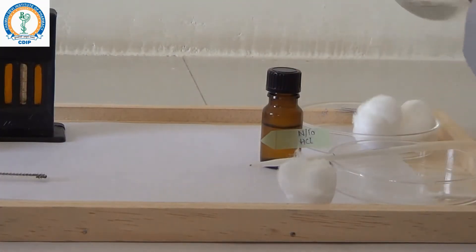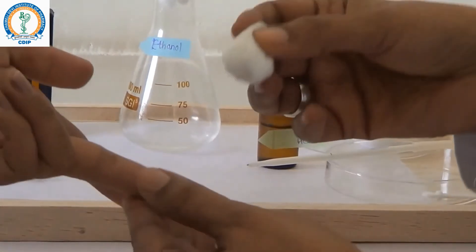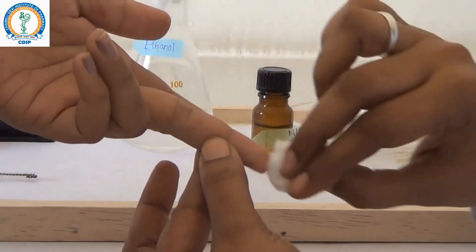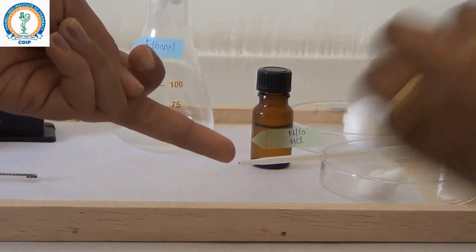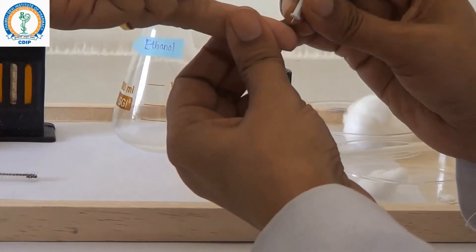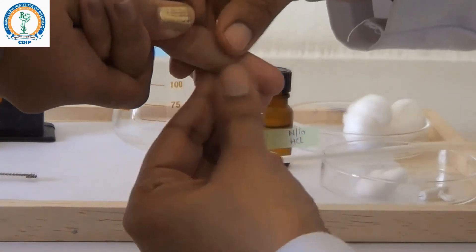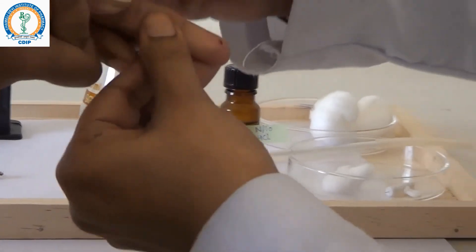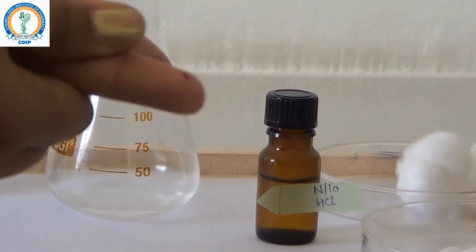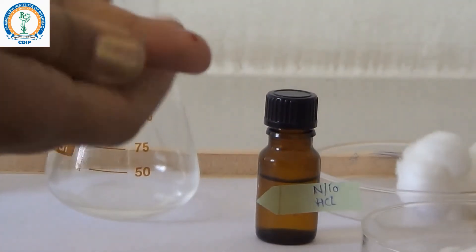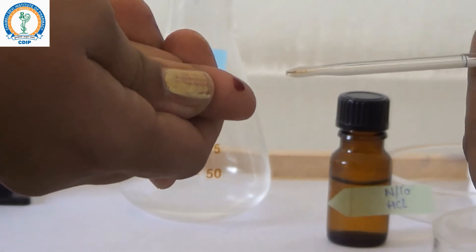Now, sterilize the finger with ethanol and prick the fingertip with lancet. Let the blood ooze out from the fingertip and make a huge drop of blood so that it gets easily filled up in the micropipette of 20 microlitres capacity.